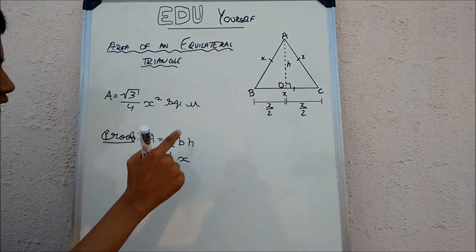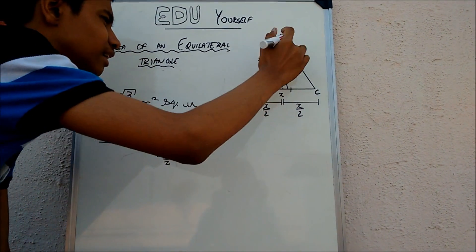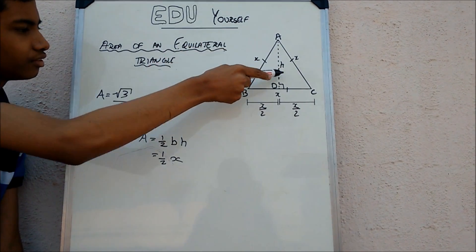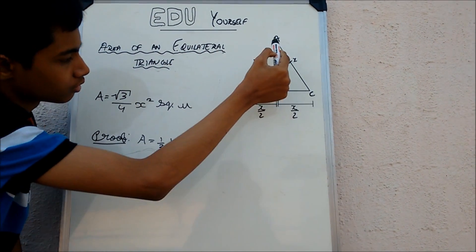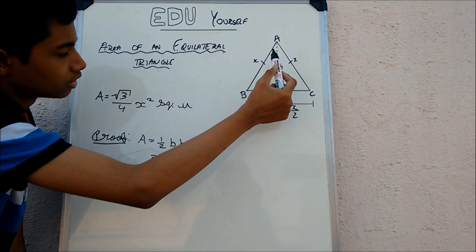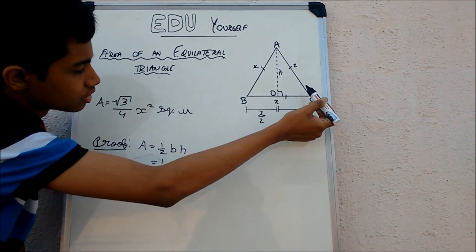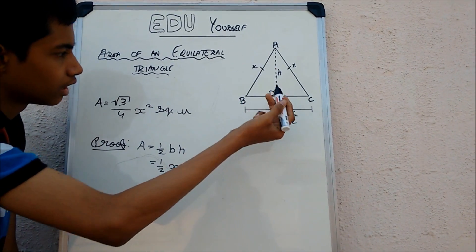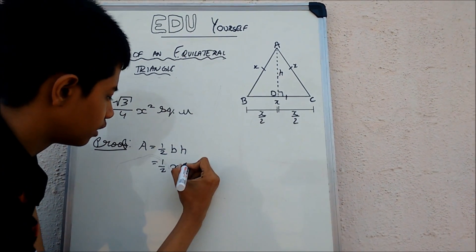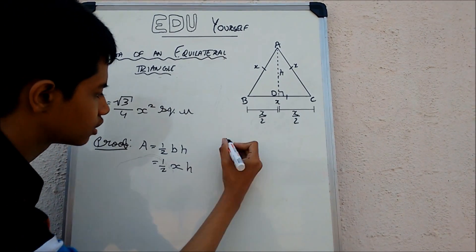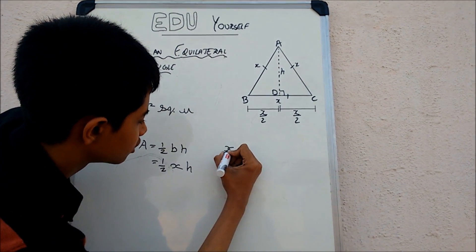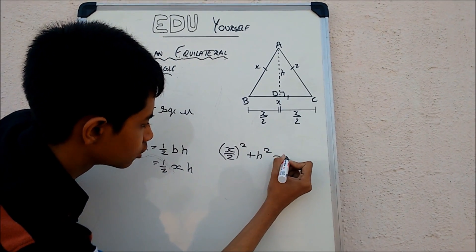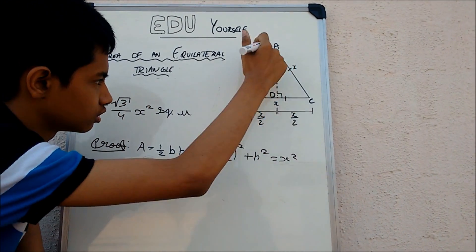Now the problem is finding the height. You can see that there is a right angle triangle here with hypotenuse x and one of its legs being x by 2. So the height h is nothing but the other leg. We know that (x/2)² plus h² is going to be x squared. So (x/2)² plus h² equals x squared. This is the basic Pythagorean theorem.